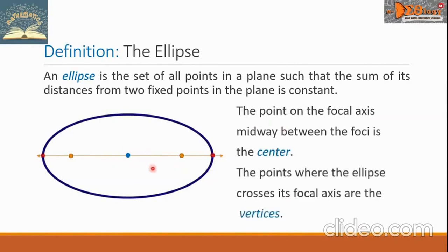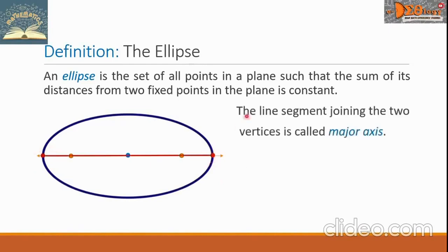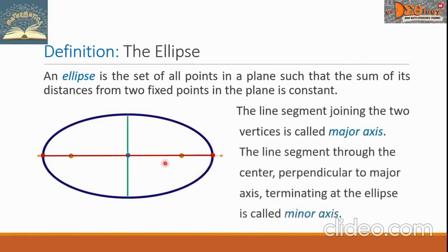The points where the ellipse crosses its focal axis are the vertices. So we have two vertices — this is the first vertex and this is the second. The line segment joining the two vertices is called the major axis. This line segment in red is the major axis. The line segment through the center, perpendicular to the major axis, terminating at the ellipse, is called the minor axis. This line segment in green is the minor axis.